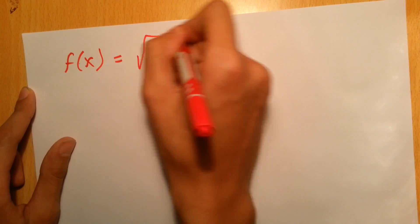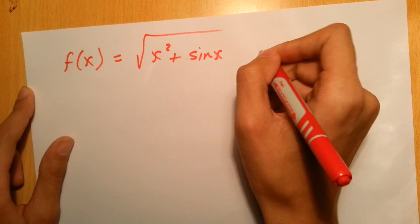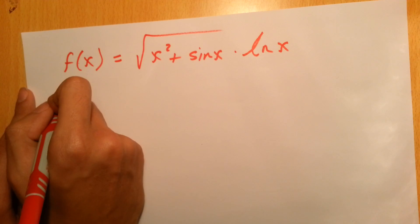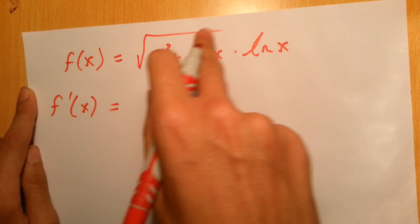Let's have another quick example before we end this episode. Let's say we have f(x). This one is a bit long but it's also easy: square root of x squared plus sin x, times ln x.